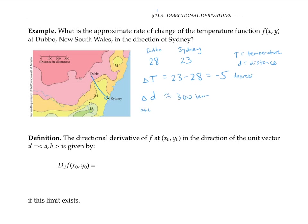So the average rate of change is going to be about negative five over 300 degrees per kilometer — that's about negative 0.0167 degrees per kilometer. That's the average rate of change; it gives us an approximation of the exact rate of change at Dubbo in the direction of Sydney. We could get a slightly better approximation by doing another average rate of change over a smaller distance, using that red arrow.